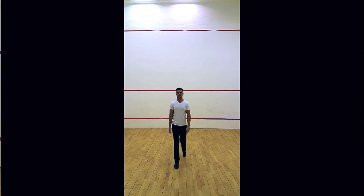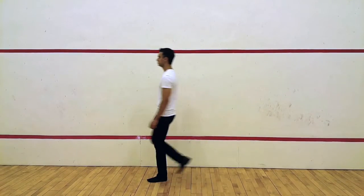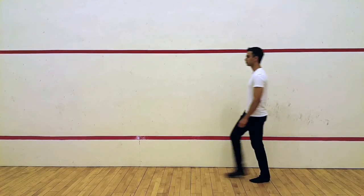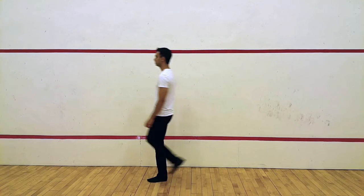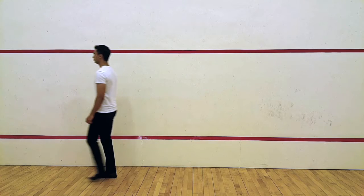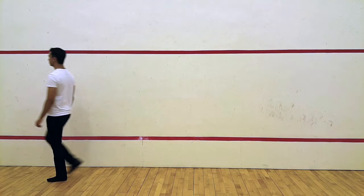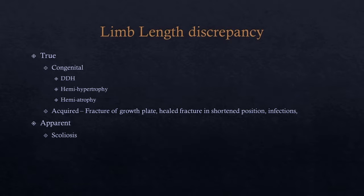The short limb gait is caused by unequal leg lengths. The affected leg is usually the shorter limb but can also be the longer limb. The gait is characterized by the head moving up and down whilst the shoulders stay level. To demonstrate this, we have simulated a short limb by using a shoe with a raised heel on one foot and no shoe on the other. Causes of leg length discrepancies can be classified into true and apparent. True discrepancies include congenital causes such as developmental dysplasia of the hip and hemihypertrophy or atrophy, and acquired causes including growth plate fractures, improperly healed fractures, and infections. It is also important to consider causes of apparent discrepancies such as scoliosis.